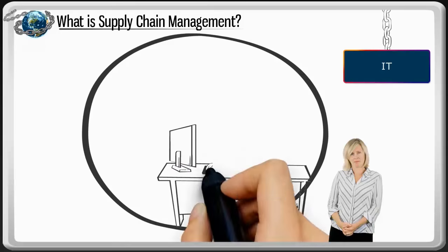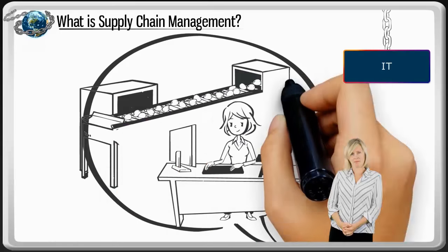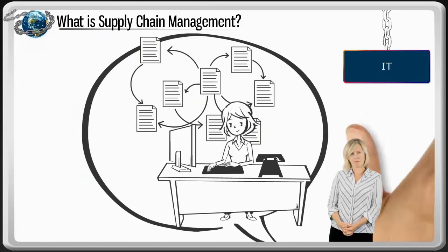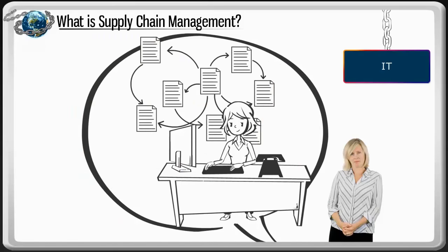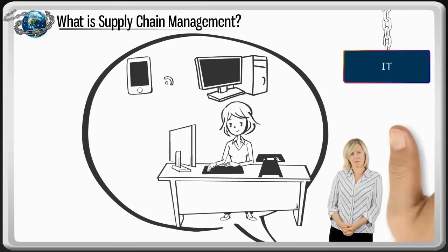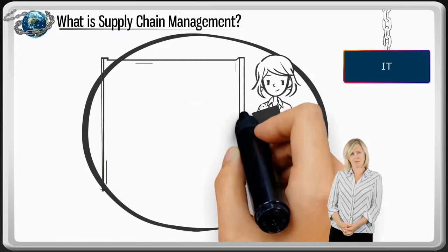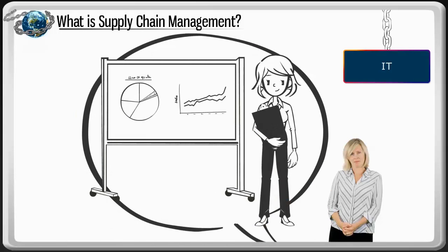IT. As an information technology professional, I automate processes, link businesses together using software, and develop reporting systems to manage data. All of these functions work together to positively impact my organization's bottom line.